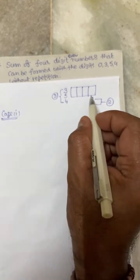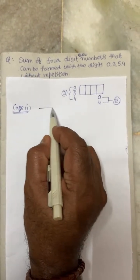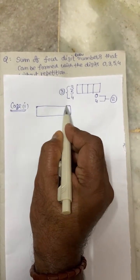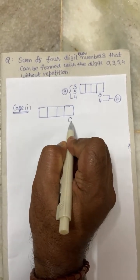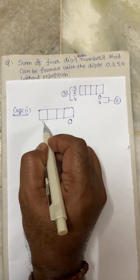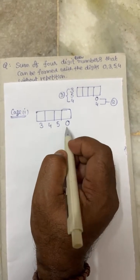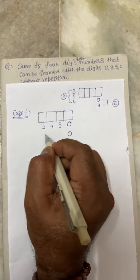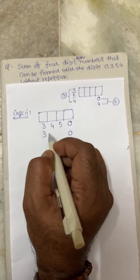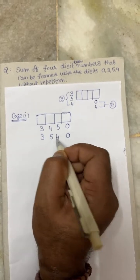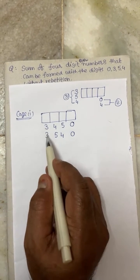In Case 1, suppose the unit place is filled with zero. The remaining digits are three, four, and five. Three is fixed in one position and the other two digits can be interchanged. So we get numbers like 3450, 3540, and so on by interchanging positions.